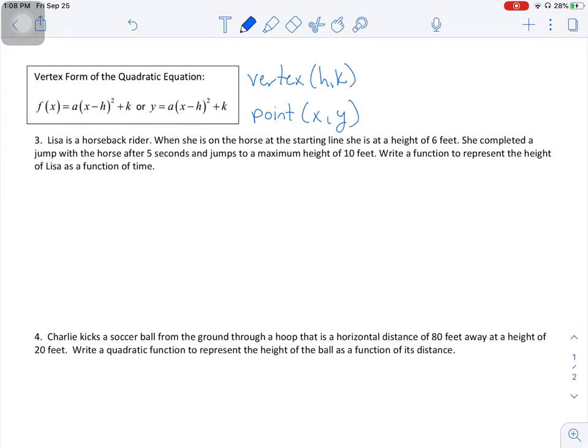So when you're dealing with word problems, what you want to always start with doing is read it, annotate it, and if you can, draw a picture that the information gives you. So Lisa is a horseback rider. When she is on the horse at the starting line, she is a height of 6 feet. She completed a jump with the horse after 5 seconds and jumps to a maximum height of 10 feet. Write a function to represent the height of Lisa as a function of time.